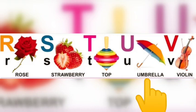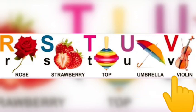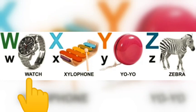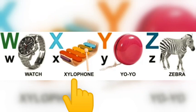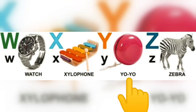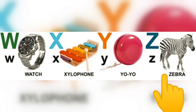U for umbrella, V for violin, W for watch, X for xylophone, Y for yo-yo, Z for zebra.